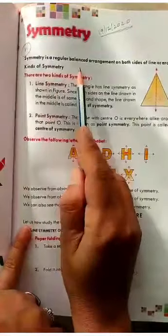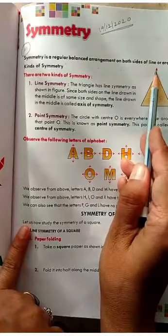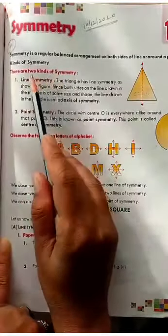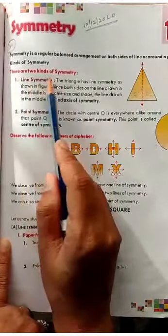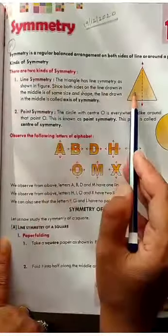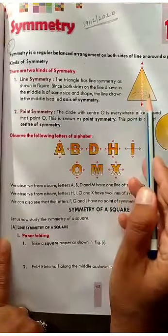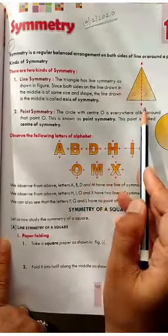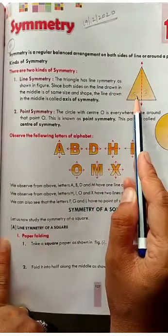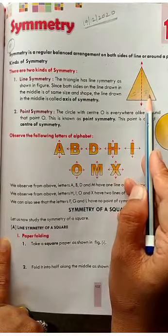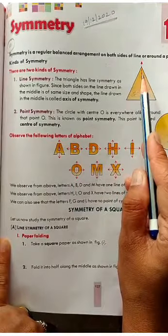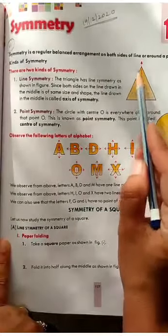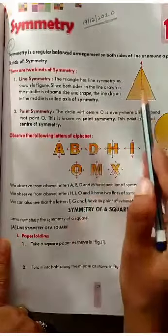So symmetry is a regular balanced arrangement on both sides of a line or around a point. Now we have to understand the kinds of symmetry. There are two kinds of symmetry. First one is line symmetry — using a line, we can make a symmetry. The triangle has a line symmetry as shown in the figure, since both sides of the line drawn in the middle are the same size and shape. This line is called the axis of symmetry or line of symmetry.